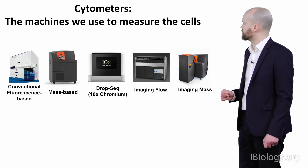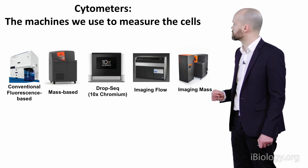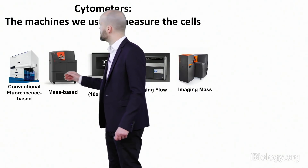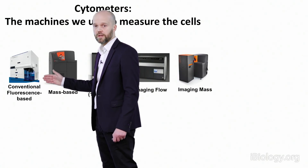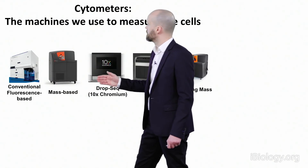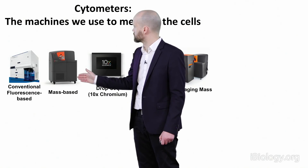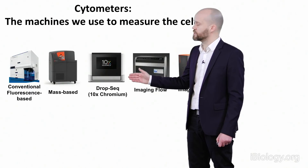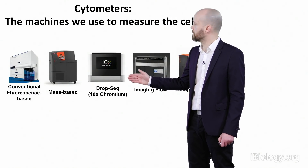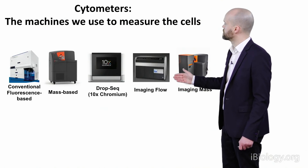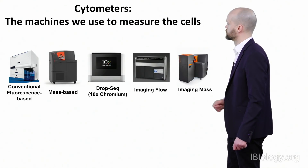For this presentation, I want to introduce five different cytometry systems. Starting with conventional fluorescence-based flow cytometry, then mass-based cytometry — also flow-based — then flow cytometry with a genomic measurement endpoint looking at DNA and RNA, and then the focus of this presentation: imaging flow cytometry and imaging mass cytometry.